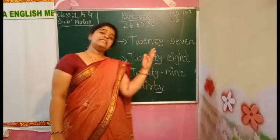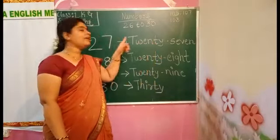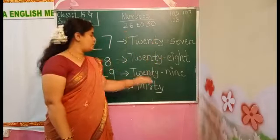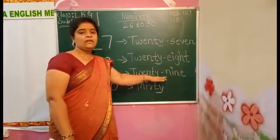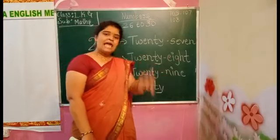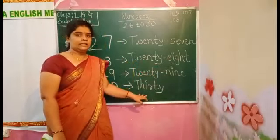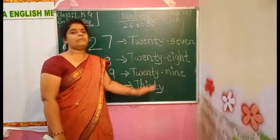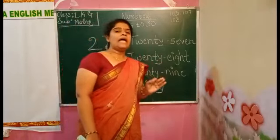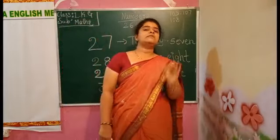In last classes, you know the spelling of 20. That's why you know how to write the number names of 21 to 29. Like this, we have to learn the number name of 30. When you know the number name of 30, you can write 31 to 39 number names.